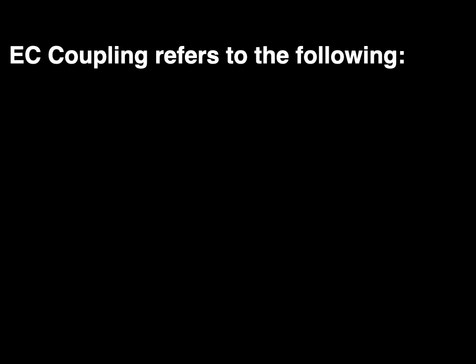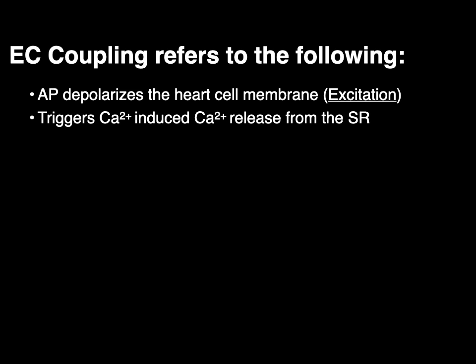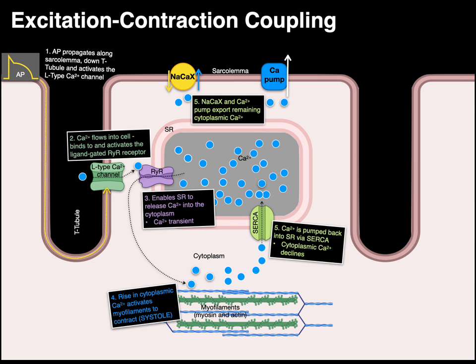EC coupling refers to the following: an action potential depolarizes the heart cell membrane and triggers calcium-induced calcium release from the sarcoplasmic reticulum. Calcium from the SR activates the myosin and actin to contract, and the heart pumps blood.